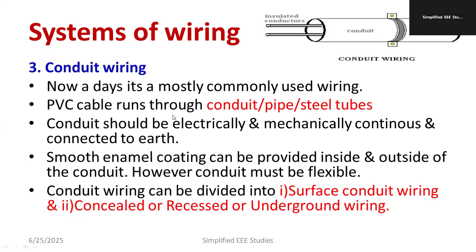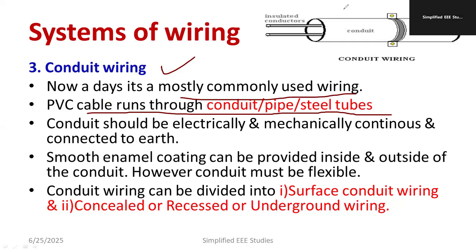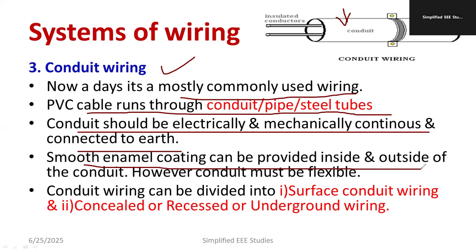Next is conduit wiring, which is the most commonly used wiring today. The PVC cable runs through a conduit — a pipe or steel tube. The conduit provides mechanical strength. The conduit should be electrically and mechanically continuous to earth. A smooth enamel coating should be provided on the conduit, and the conduit must be flexible to avoid brittleness or breakage.